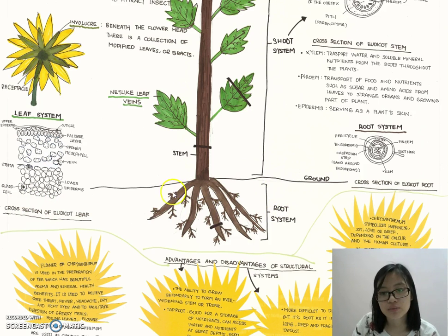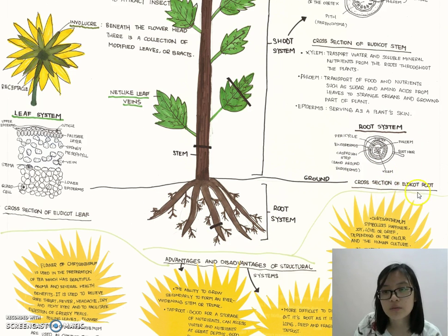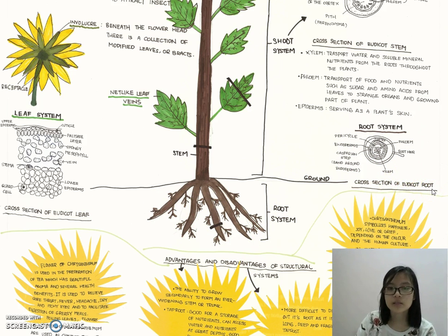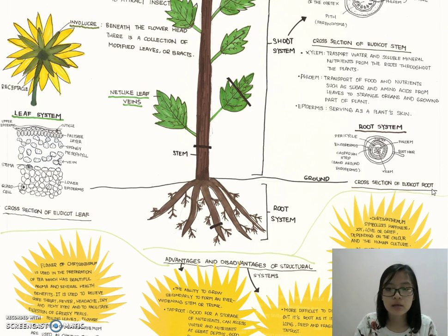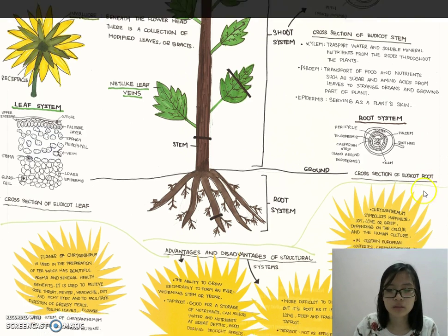Now is the root system. This is a cross-section of the eudicot root, because this host plant is a eudicot plant. The root system is growing separately and parallel into the soil.